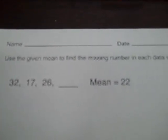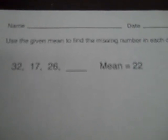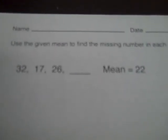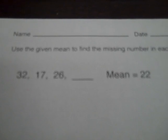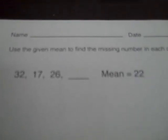Hi Kipsters. Today we're going to learn how to find the missing number when we're given the mean in a data set. You've seen these types of questions before. If you see three numbers and you don't know what the fourth one is, but you know the mean is 22, here's how we're going to go about solving it. The mean is the typical value in a data set that's found when we add up all the numbers and divide by the number of addends.